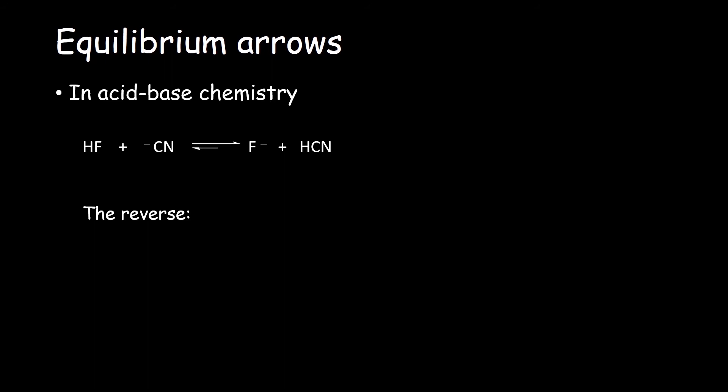Conversely, if the reaction is written with the hydrocyanic acid and the fluoride ion as the reactants, the equilibrium arrow favors the reactant side. The meaning of this is that very little product is formed.